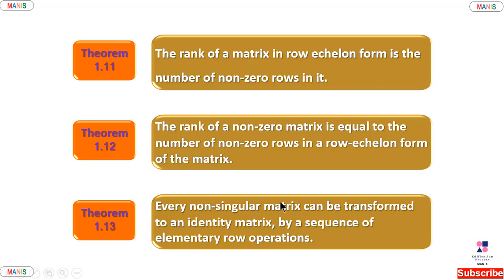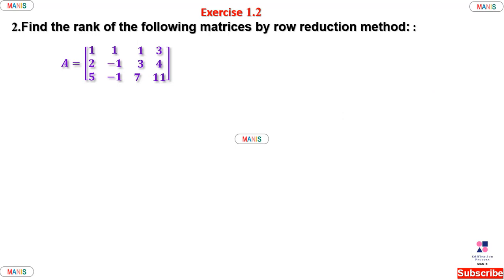Now let's see an example. Suppose A is equal to the matrix: first row [1, 1, 1, 3], second row [2, -1, 3, 4], third row [5, -1, 7, 11]. We will find the rank of this matrix using the row reduction method, converting to row echelon form.